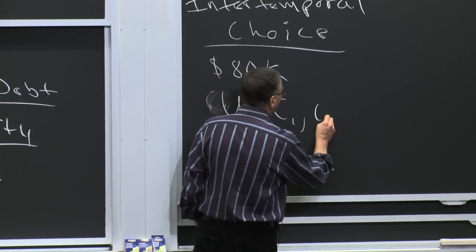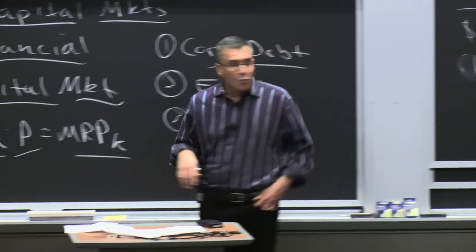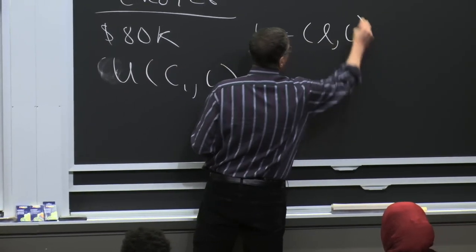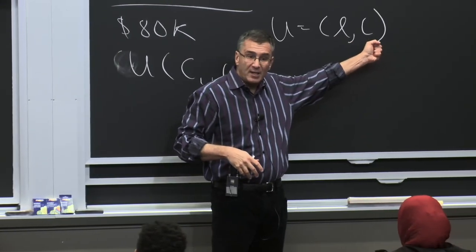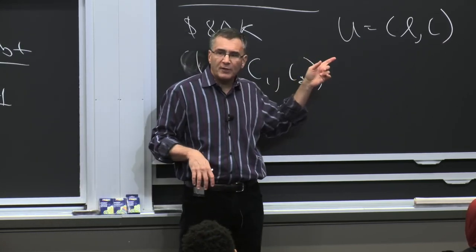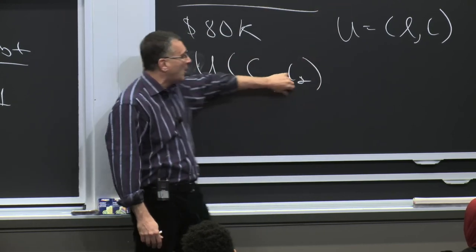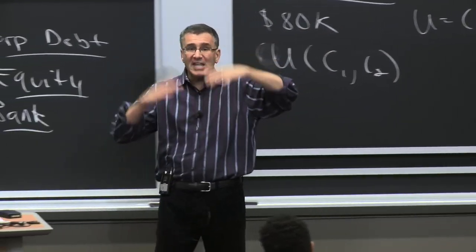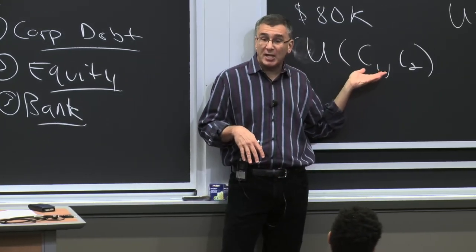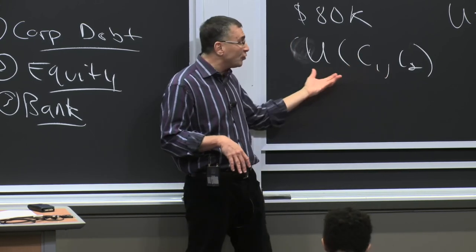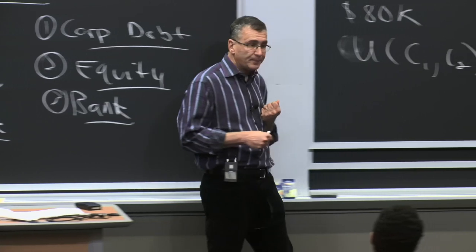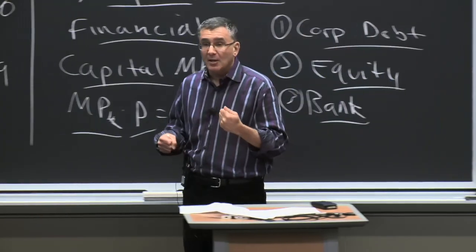Your utility function is a function of C1 and C2. You can think of this sequentially: first decide how you're going to split your income across time, then decide what to spend it on each period. That's going to be a function of your taste for consumption this period versus next period, and the price the bank will pay you for delaying consumption. Now what happens when the interest rate goes up? You should spend less today and save more because it's rewarded — but that's not necessarily true because of income and substitution effects.